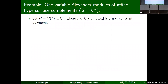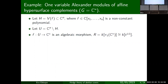Let me give some examples of Alexander modules and how they've shown up in the study of singularities. Starting with one-variable Alexander modules: G is going to be C*. If I have a hypersurface — the zero set of a polynomial — I have a fine hypersurface and I look at its complement. The defining polynomial F can be viewed as an algebraic map from the complement to C*, since you're taking out the zeros, and that's an algebraic morphism.